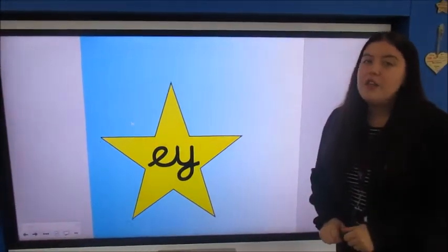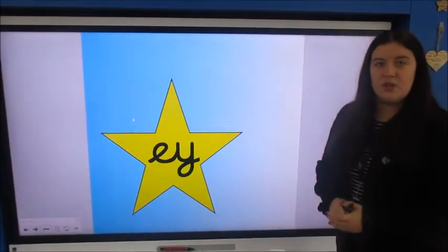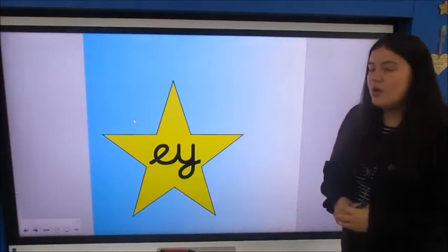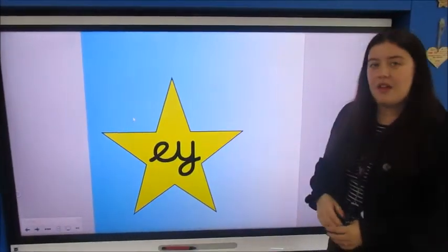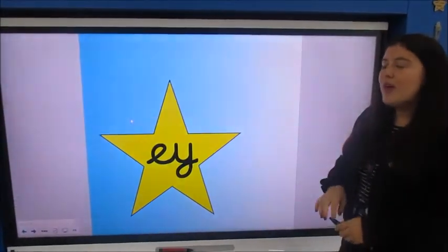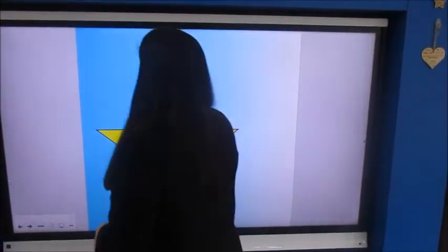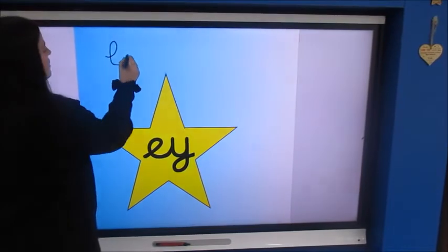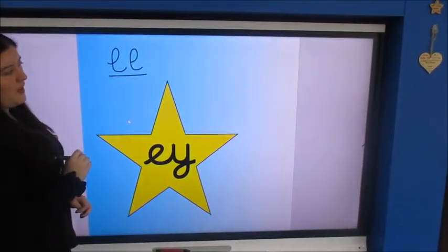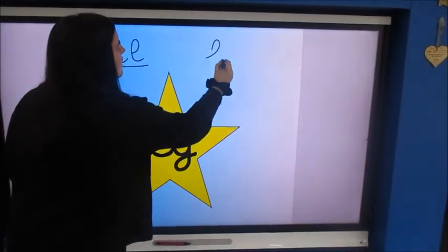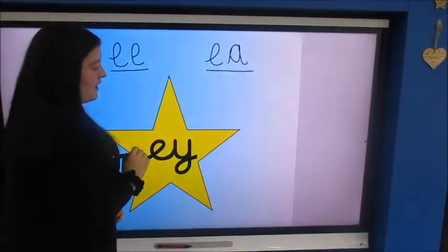Well done if you said E. Now we see this sound at the end of a lot of words, so it's really important that we try to remember when we see an E and a Y together, it makes the E sound. Now we already know some of the spellings of the E sound. We're going to just write them on the board. An E and an E we know make E.